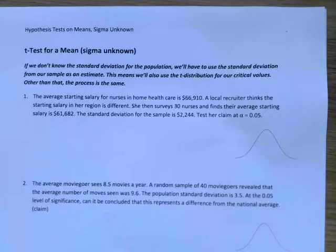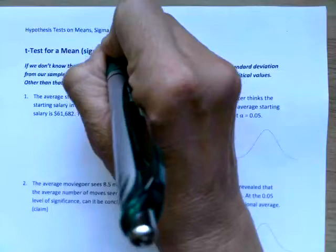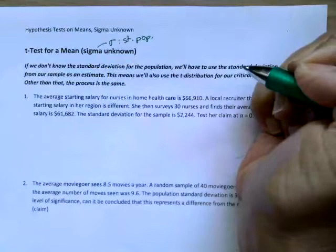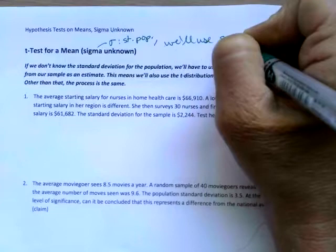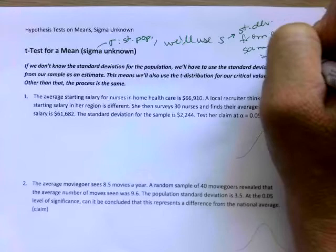So today we're going to look at doing hypothesis tests on means when we do not have the standard deviation of the population. If we don't have the standard deviation of the population, our next best thing to use will be the standard deviation from our sample.